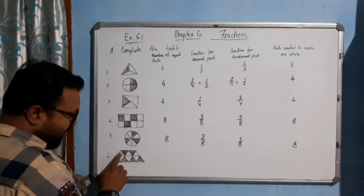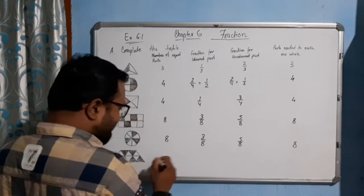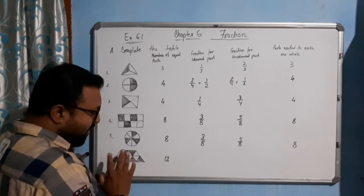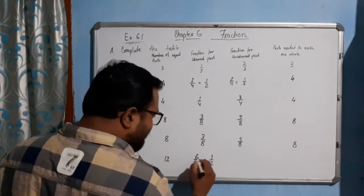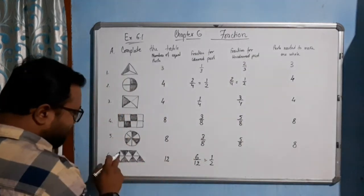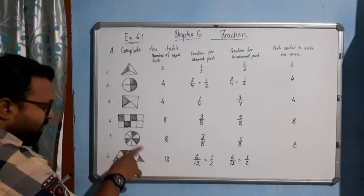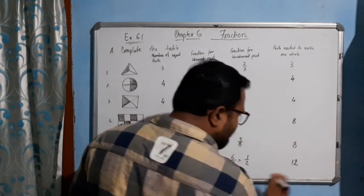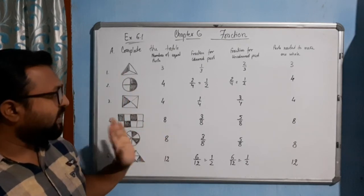Now the last one, question number 6. How many parts? 1, 2, 3, 4, 5, 6, 7, 8, 9, 10, 11, 12 — so 12 parts. How many parts are colored? 1, 2, 3, 4, 5, 6 — 6 parts are colored, so the fraction of colored part is 6/12, or half. The fraction of uncolored is also 6/12, that is half. How many parts are required to make a whole? All 12 parts should be shaded, so 12. I think you have understood this part — question (a) is very simple and clear. Thank you.